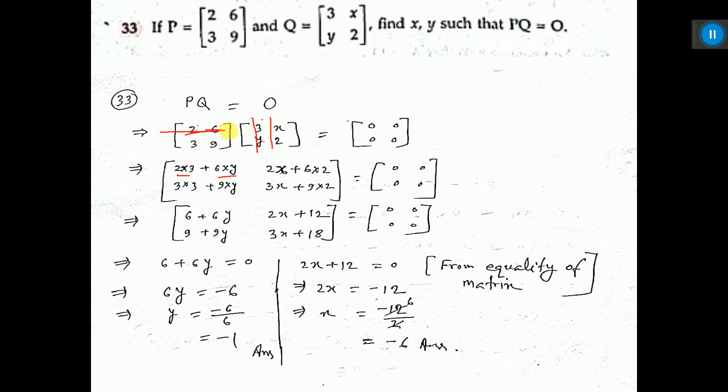So 2 into X, 6 into 2, and in between plus. I have written 2 into X here, 6 into 2 here. First row, second column.